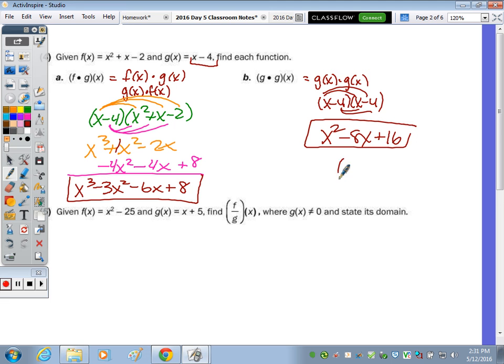If it was X plus 4 times X minus 2, which are conjugates. I mean a 4, rather. X plus 4 times X minus 4. If they're conjugates, then you only need to do the first and the last. But when they're the same, you have to distribute out.